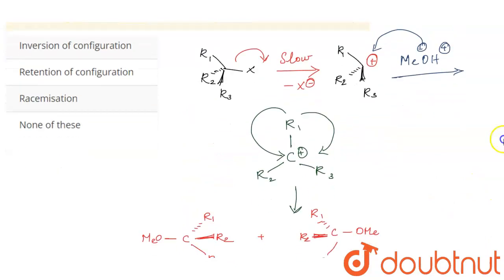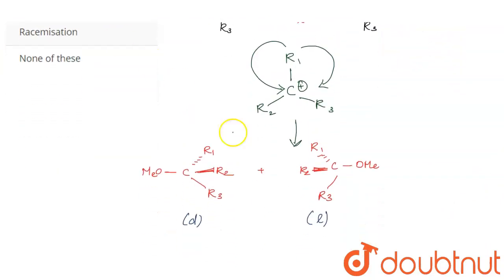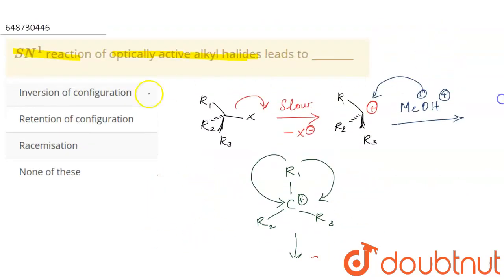So what had actually happened? This process is called racemization. During SN1 reaction we will be having racemic mixture as the product. So let us check the options.